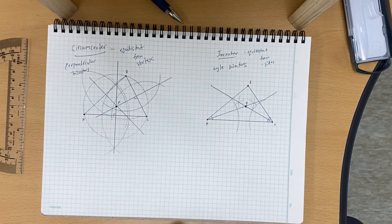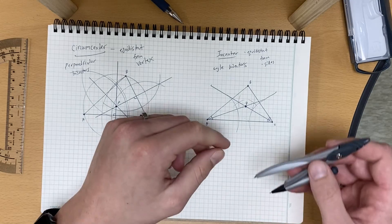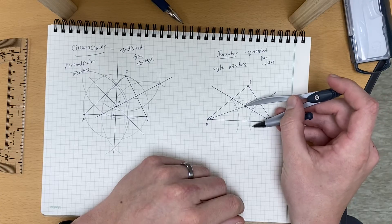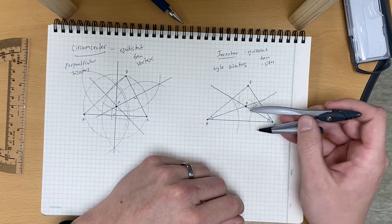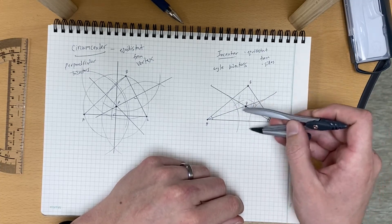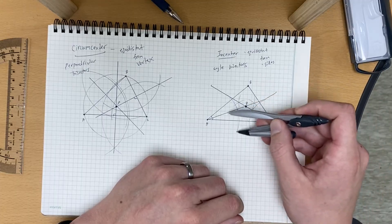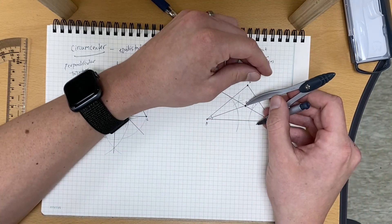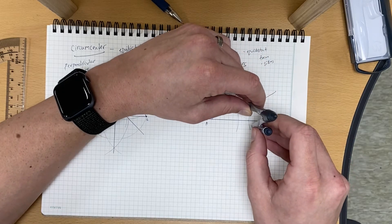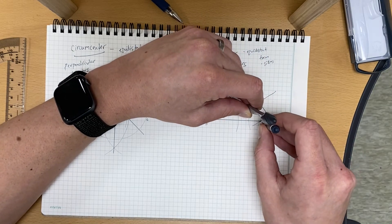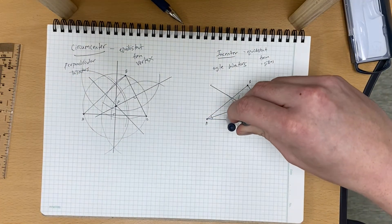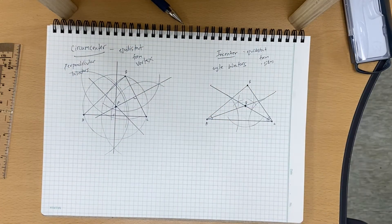We need enough room here to work with. We're going to put our needle at point P and open our compass wide enough to draw an arc that intersects line segment AC two times. There's one intersection and we keep it going and have another intersection.